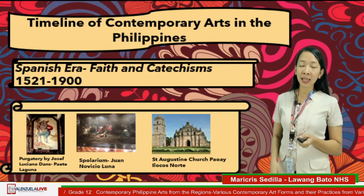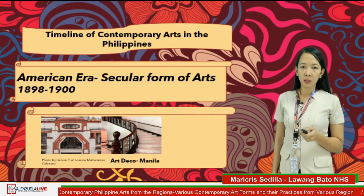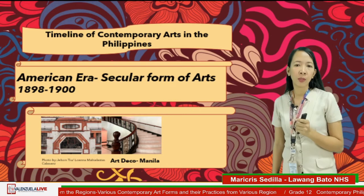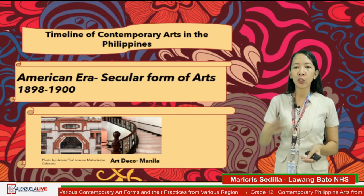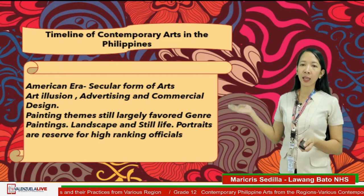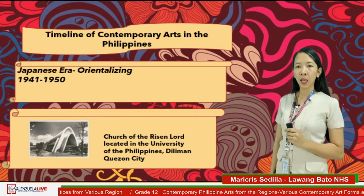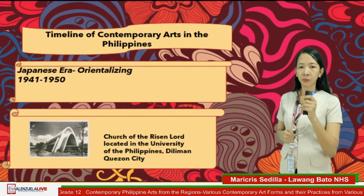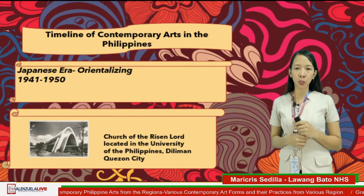The next timeline is the American era, from 1898 up to 1900, wherein the characteristic was secular form of art. Secular art refers to art that has no religious reference point of view, but focuses on humanistic view and nature. The Japanese era followed, from 1941 to 1950, characterized by orientalizing — they imposed their own music and arts in the Philippines. One example is the architecture of the Church of the Risen Lord at the University of the Philippines in Diliman, Quezon City.